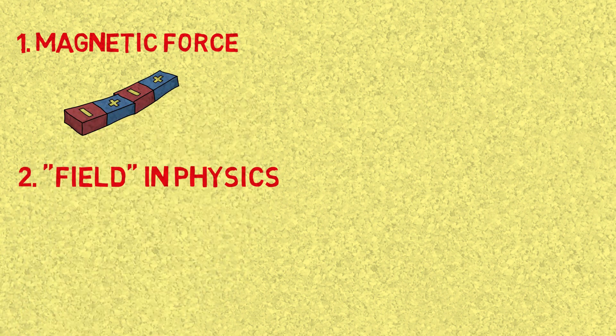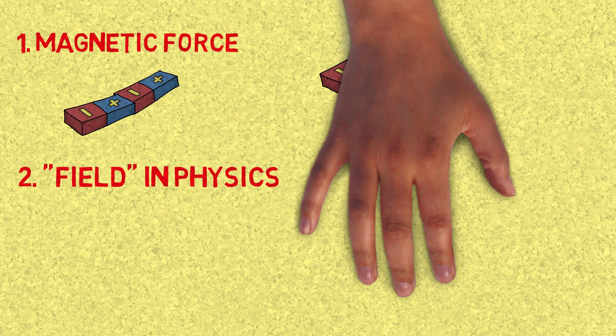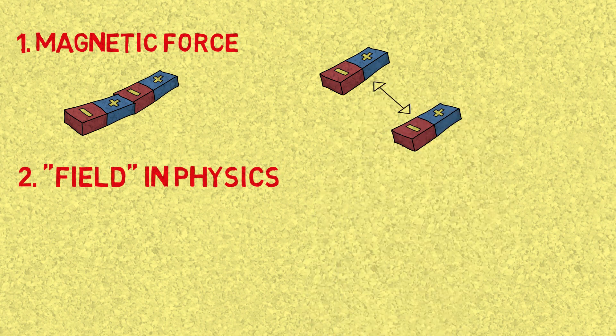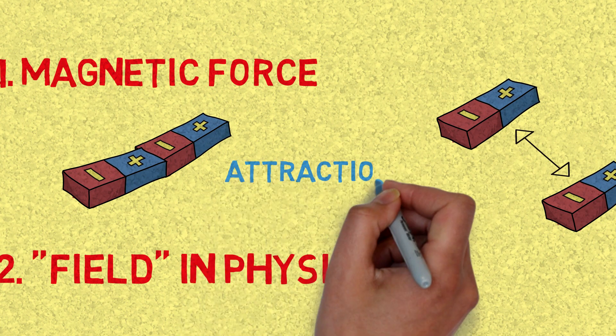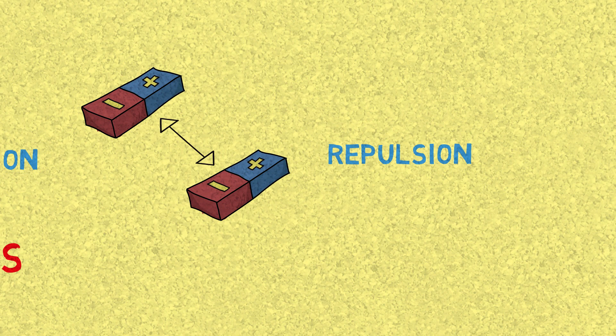Magnets, as we know, attract and repel other magnets or metals. Magnetic force is this force of attraction or repulsion caused by the magnet. It is very simple.